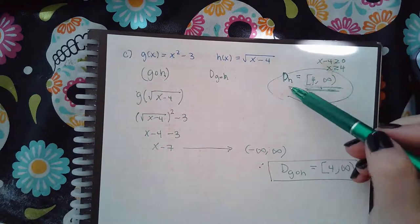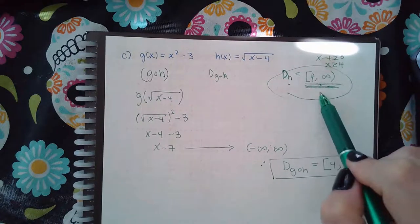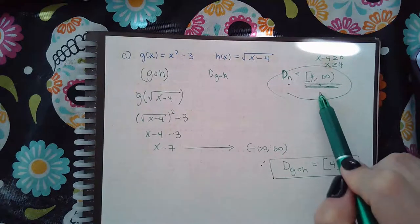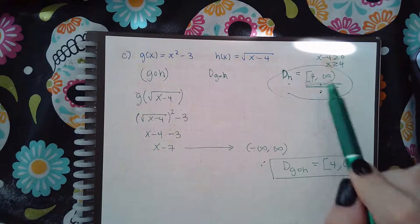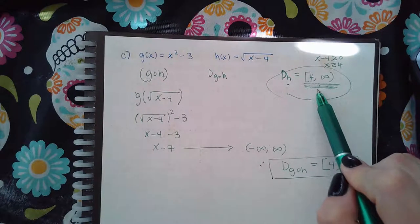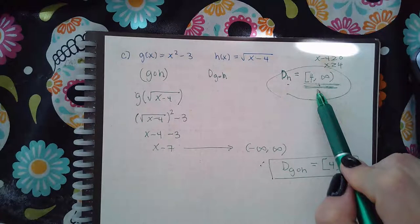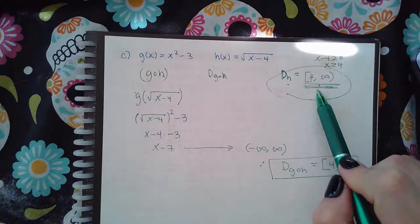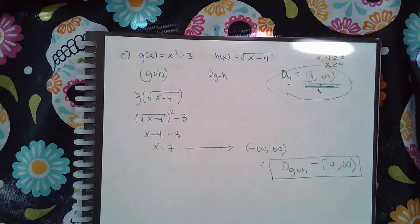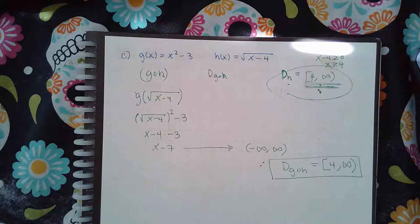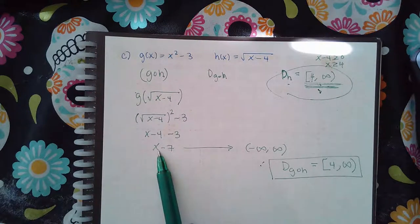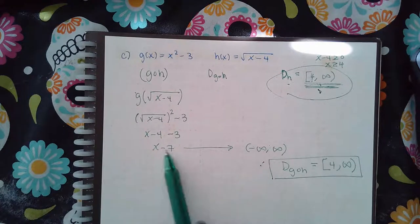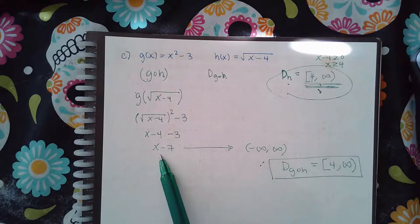The inside function is supposed to be your potential domain. This is the domain of g of h. However, you do have to take out any values that don't lead to a final output. Right? But this one led to okay outputs. This one would have had an output no matter what g was.